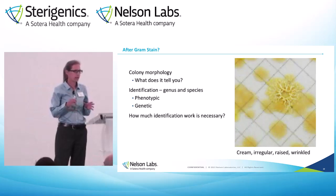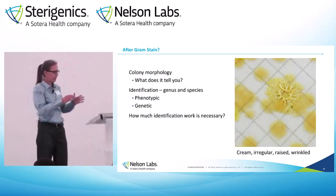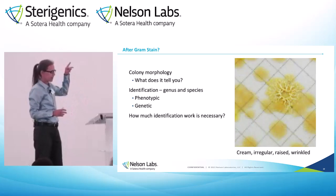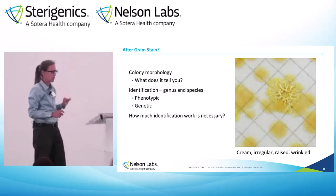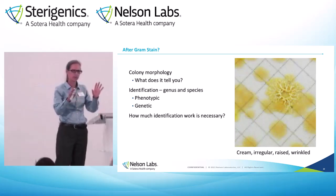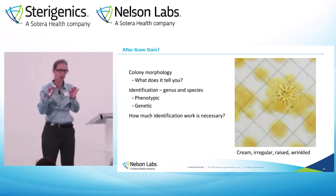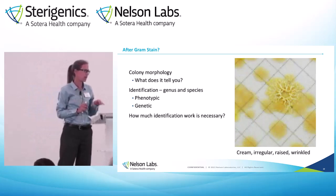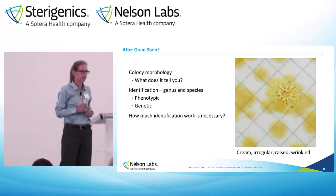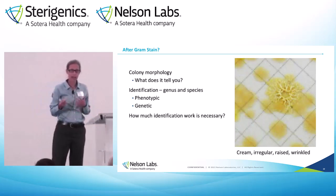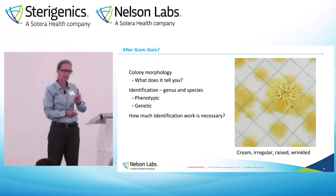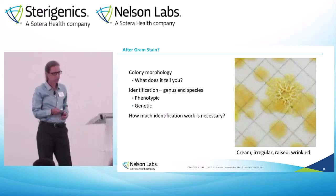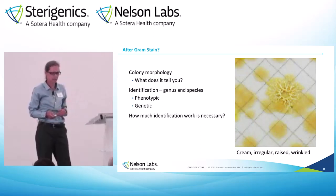Most companies are going to look at a bioburden plate, have the analyst scan it, look at the top three to five most predominant morphologies, and do a gram stain on those. If you have anything with color, they'll recommend you actually identify those to make sure they aren't one of those nasty bugs that's really hard to kill. It would be a good idea to, maybe not very frequently, but once in a while, identify to species and genus level exactly what is on your product or in your environmental monitoring areas. But it wouldn't be necessary to do it every quarter.